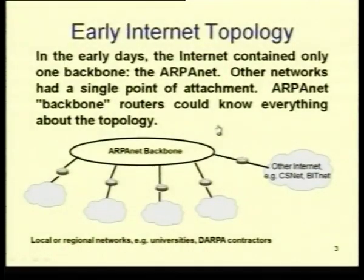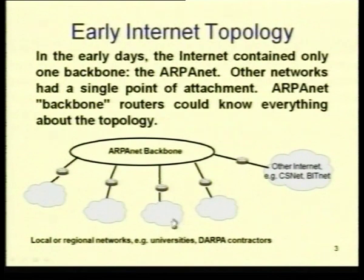If you look at the early internet topology, in the early days the internet contained only one backbone — the ARPANET — and other networks had a single point of attachment. The ARPANET backbone routers could know everything about the topology. You had the ARPANET backbone and then different networks which would just connect to it.